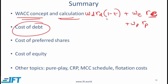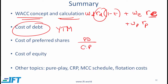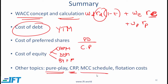We discussed different ways of calculating component costs. For cost of debt, we use the YTM approach with a financial calculator. For cost of preferred shares, it equals the preferred dividend divided by the current price. For cost of equity, know all three methods well: CAPM, the dividend discount model assuming perpetual growth, and the bond yield plus a risk premium. We also covered miscellaneous topics: the pure play method, the country risk premium, the marginal cost of capital schedule, and flotation costs.